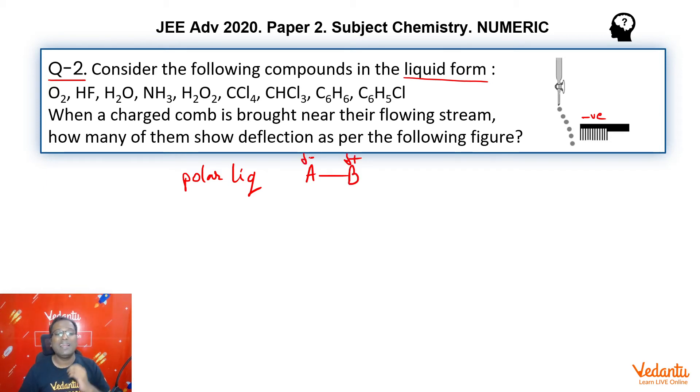These dipoles in the molecule will quickly align themselves such as to attract the positive part towards the negative part—the negative part of the comb. So all we need to see in all these molecules is overall which molecule is polar.